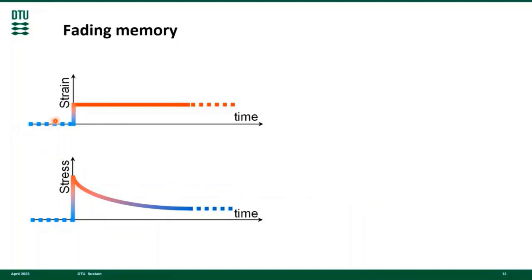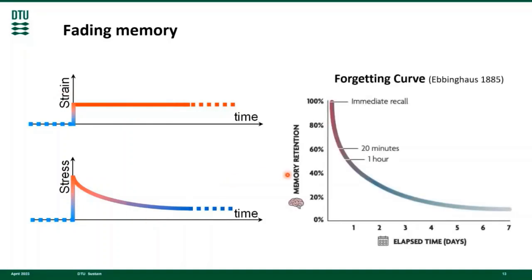When new strain is applied to an asphalt concrete, the resulting stress initially jumps to a high level and then subsides and drops over time. It can be said that the material's memory of the strain application event is fading. Similarly, when a human learns new information, his recollection ability jumps to a high level and then subsides or drops over time. This is the classic forgetting curve of Hermann Ebbinghaus, a 19th-century German psychologist that pioneered the experimental study of human memory.